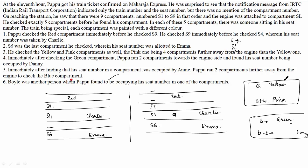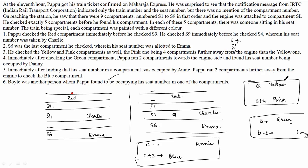The next condition: immediately after finding his seat number in a compartment occupied by Any, Pappu ran two compartments further away from the engine — so from seat C, he moves to C+2 — to check the blue compartment. This is also a variable condition. We now have three variable conditions to work through, and Boyle was another person found occupying Pappu's seat in one of the compartments.